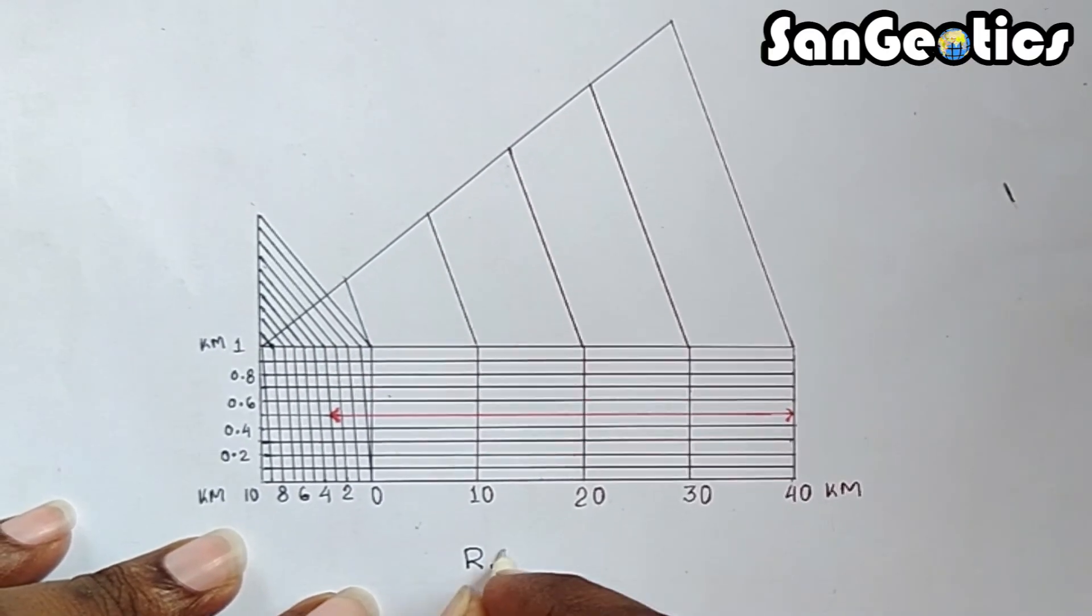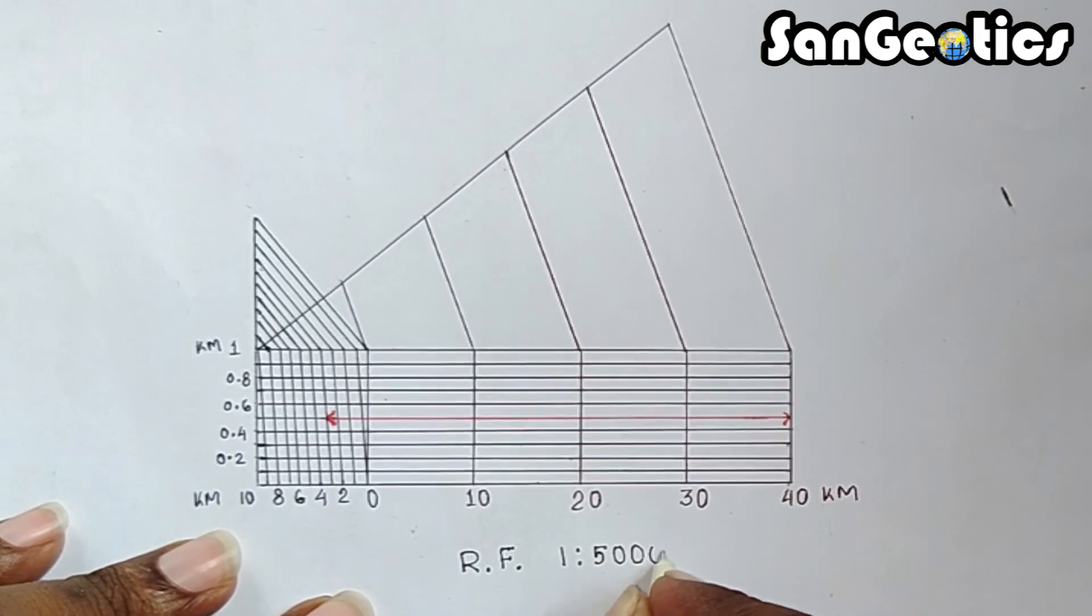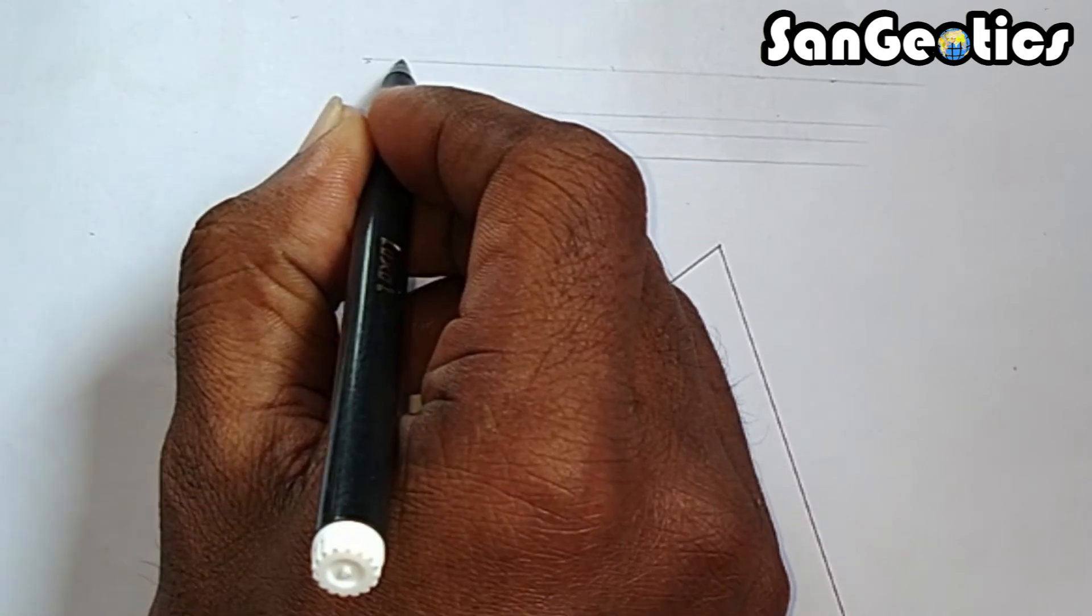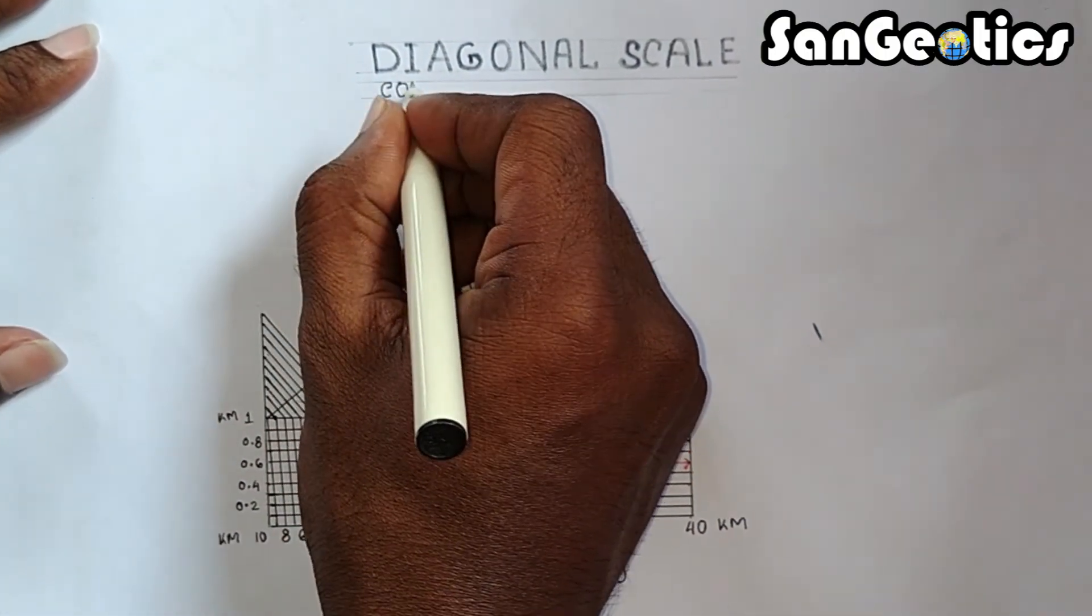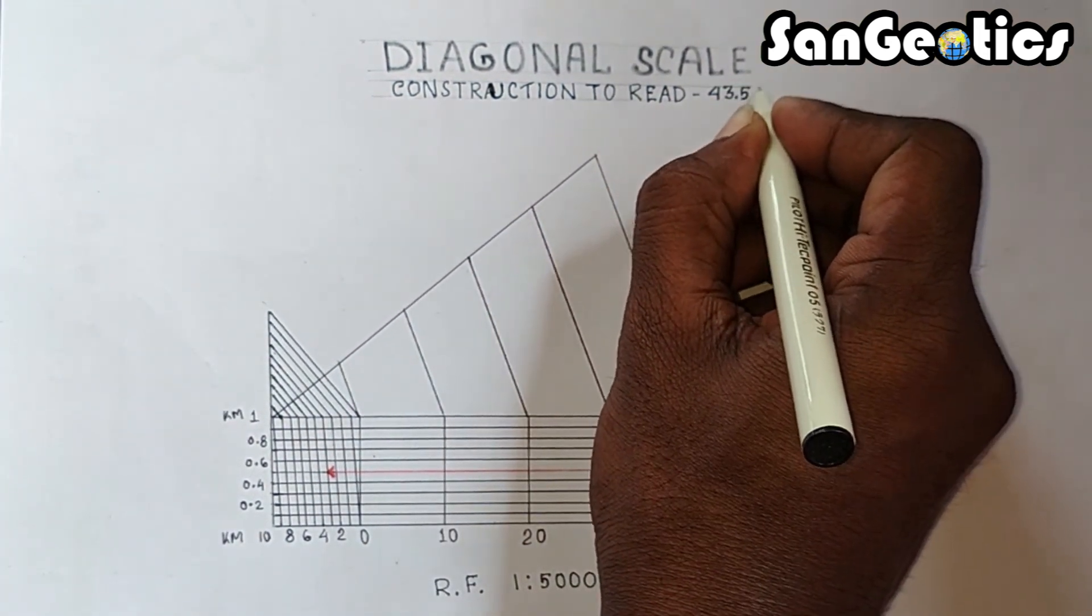Now put the scale on the bottom as RF is equal to 1 is to 5 lakh and also give a suitable heading as diagonal scale construction to read 43.5 km.